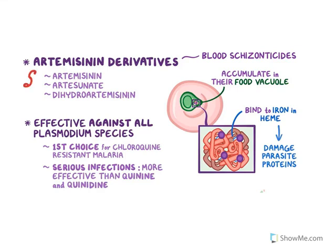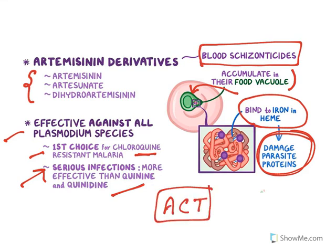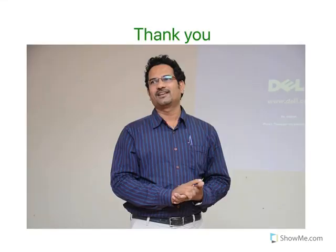Artemisinin derivatives — artemisinin, artesunate, and dihydroartemisinin — are all blood schizonticidal drugs that kill plasmodium present in red blood cells. They accumulate in the food vacuole of the plasmodium and bind to iron in heme, damaging parasite proteins. They are effective against all plasmodium species, are the first choice for treating chloroquine-resistant malaria, are more effective than quinine and quinidine, and are used in artemisinin combination therapy.